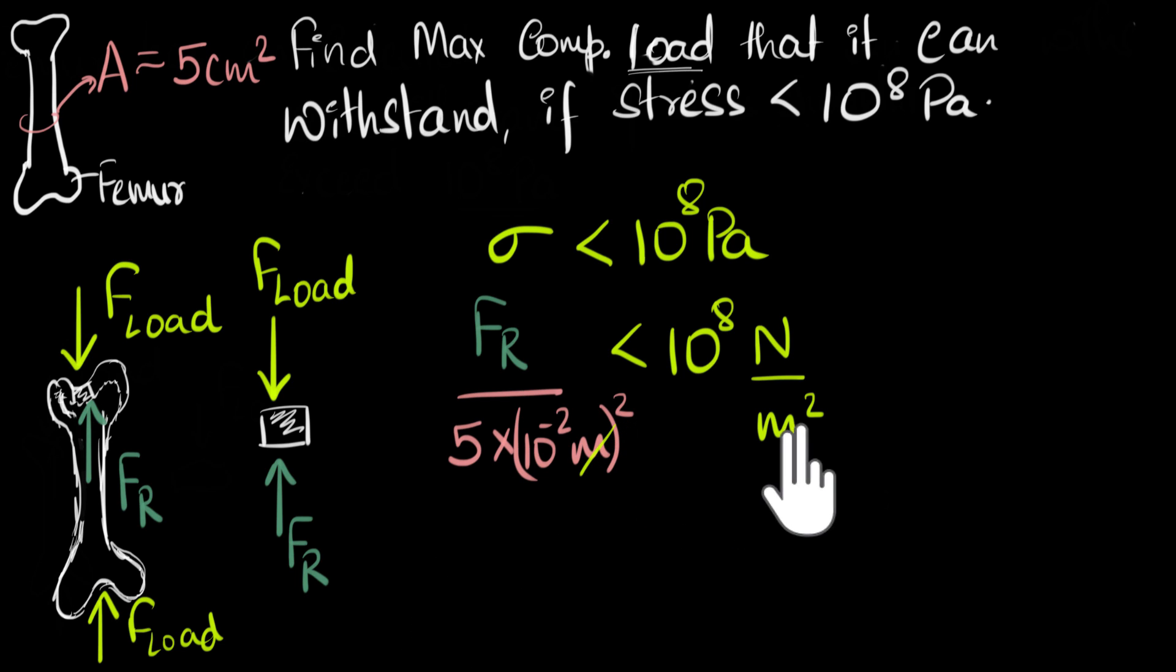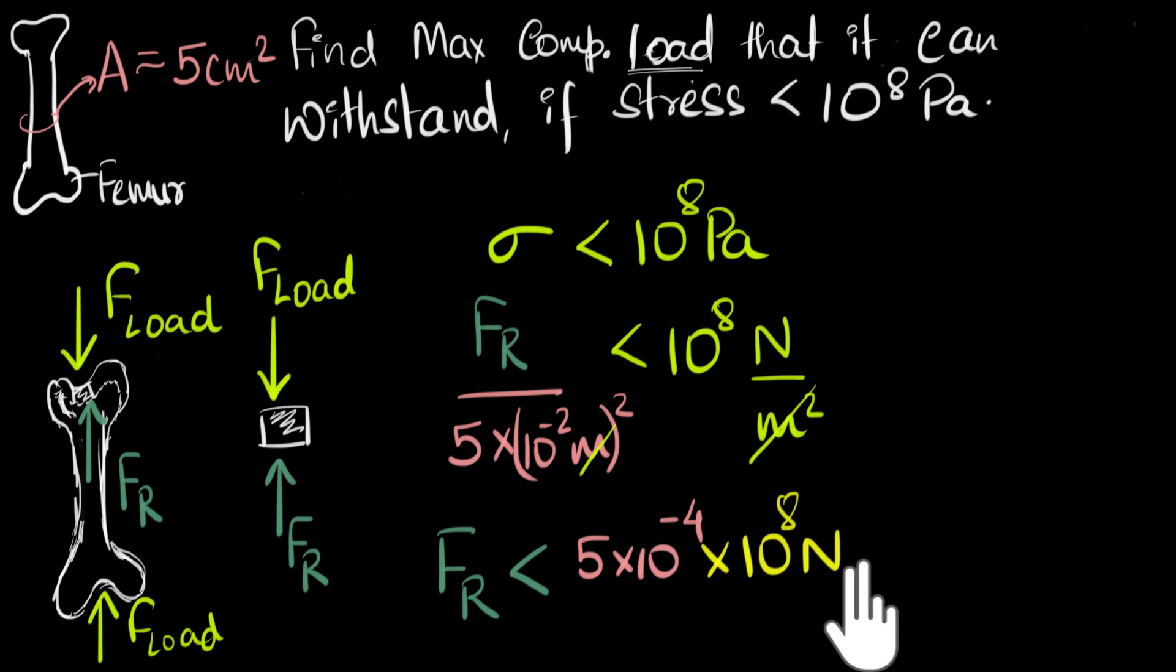Now, meter squared and meter squared cancels, and so if you multiply by the area on both sides, what you'll end up with is the restoring force should be less than 5 times 10 to the power, minus 2 squared is minus 4, times 10 to the power of 8 Newtons.